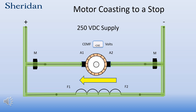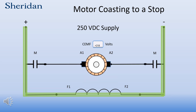When the end contacts open, current no longer flows through the armature and the armature coasts to a stop. The energy of the armature is lost through friction of the bearings, the mechanical load applied to the motor, and the movement of air caused by the armature. Because the shunt field is still energized, counter-EMF is still generated in the armature and diminishes as the armature slows.